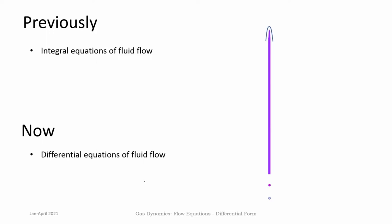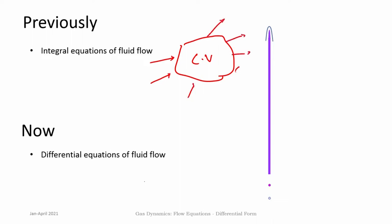In the control volume approach or the integral forms, we are looking at analyzing the fluid flow through a certain system which is a control volume, and we look at how changes happen within the control volume due to fluxes which happen across the control surfaces. We have control surfaces and control volume and we write the mass, momentum, and energy balance in an integral form.